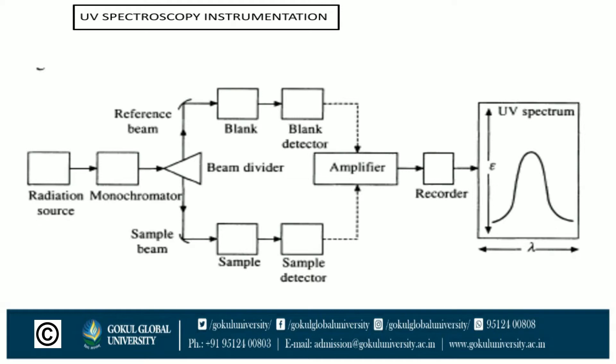The monochromatic beam is divided by the beam divider into two beams: the first is a reference beam and the second is a sample beam. The reference beam is passed through the blank or reference cell and detected by the blank detector. Similarly, the sample beam is passed through the sample cell and detected by the sample detector.